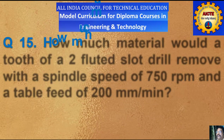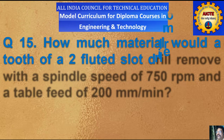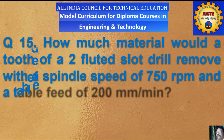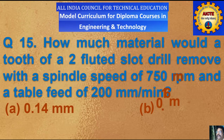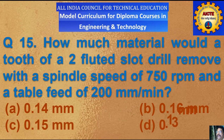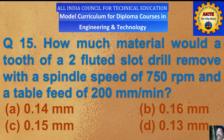Question number 15: how much material would each tooth of a 2-flute slot drill remove with a spindle speed of 750 rpm and a table feed of 1200 mm per minute? A) 0.14 mm, B) 0.16 mm, C) 0.15 mm, D) 0.13 mm.